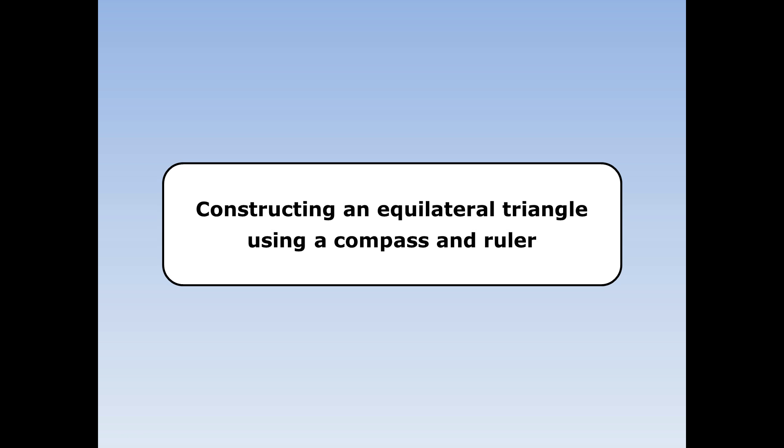Constructing an equilateral triangle using a compass and ruler. We're going to construct an equilateral triangle using just a compass and ruler. An equilateral triangle is a triangle that has every side the same and every angle the same.